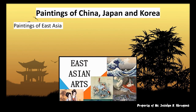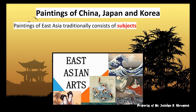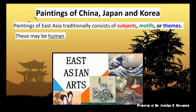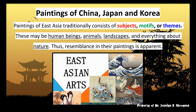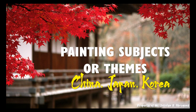Paintings of East Asia traditionally consist of subjects, motifs, or themes. These may be human beings, animals, landscapes, and everything about nature. Thus, resemblance in their paintings is apparent. The following are the painting subjects or themes of China, Japan, and Korea.